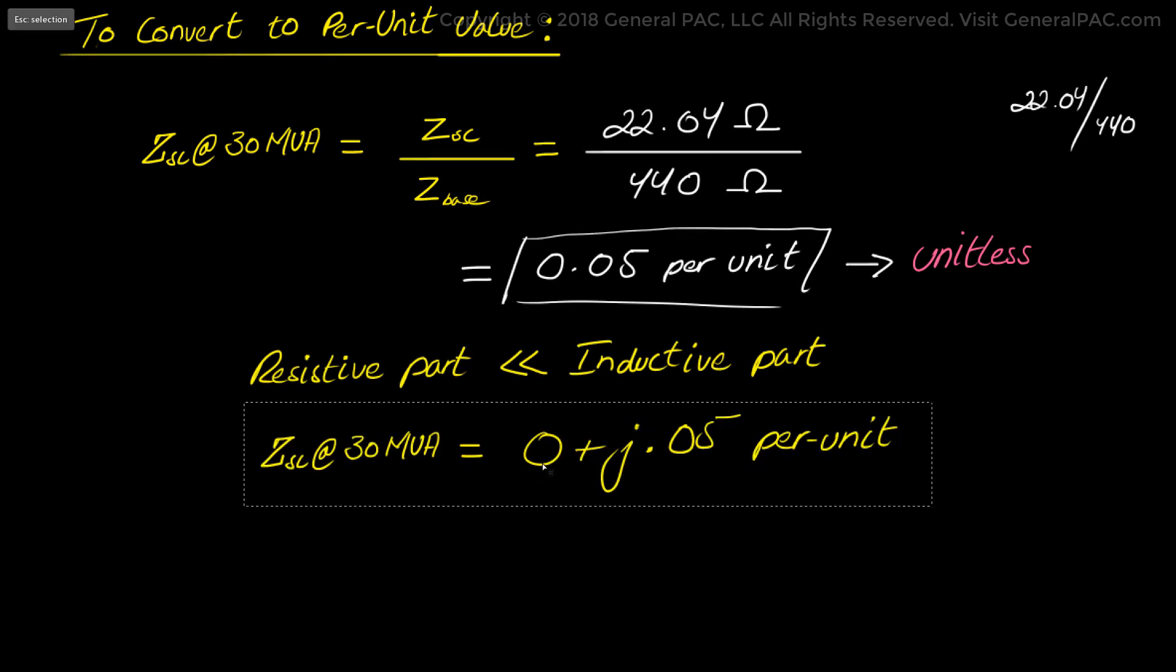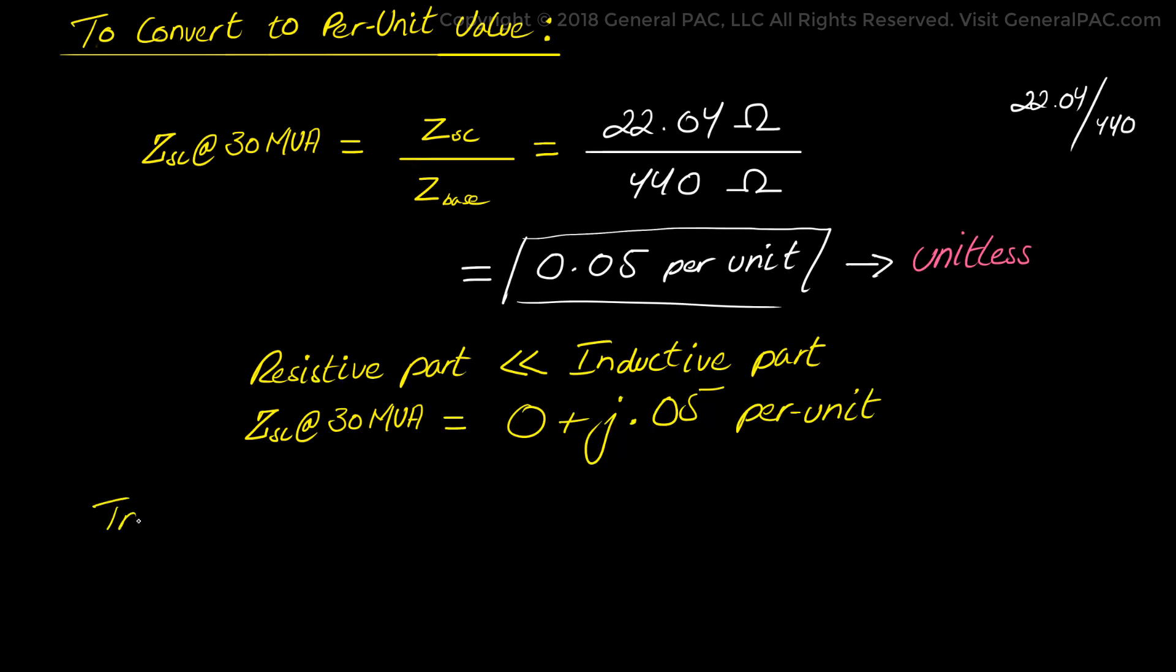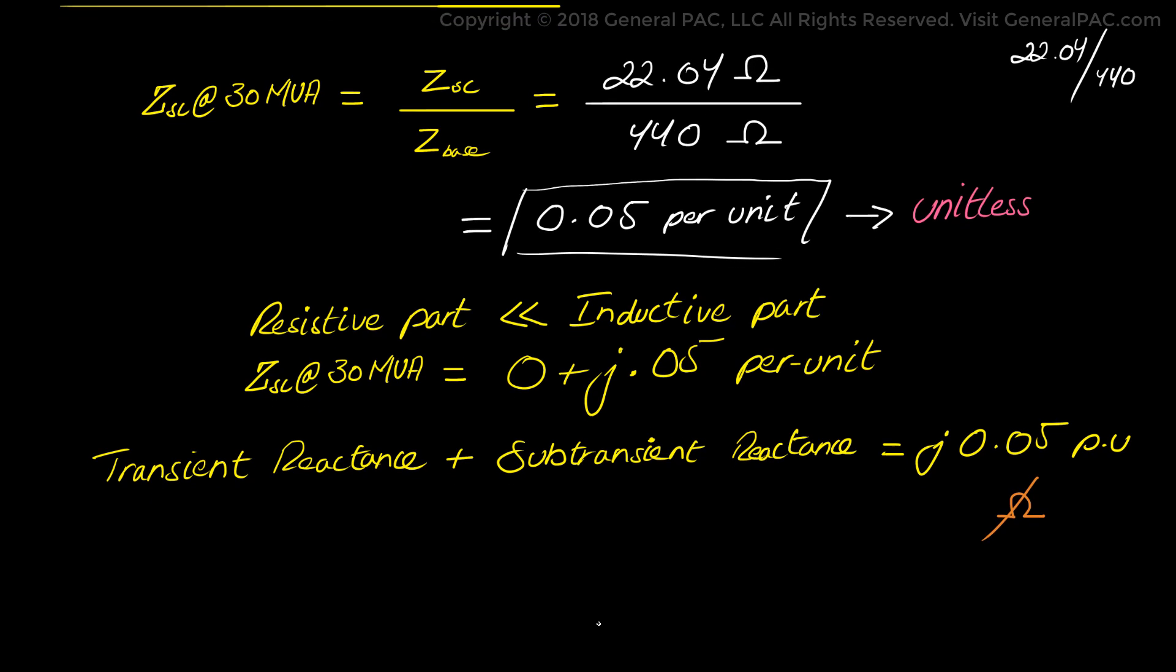Now just to simplify this a little more and to clarify we are going to assume that the transient reactance of the generator as well as the sub transient reactance is going to equal this j0.05 per unit for simplicity. Now remember we are forgetting the ohms. We are dropping the ohms and now we are talking about per unit values.